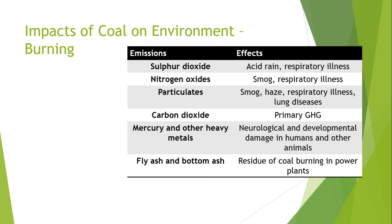Now I will discuss about the environmental effects that are basically caused when coal is burned. On the left side, the column depicts the emissions, which include sulfur dioxide, nitrogen oxides, particles, carbon dioxide, mercury and other heavy metals, fly ash, and bottom ash.